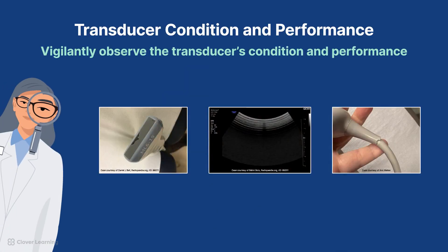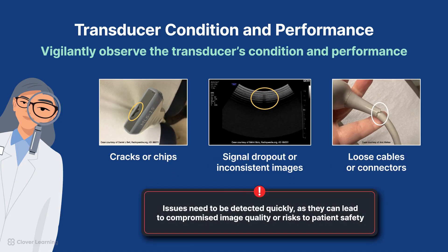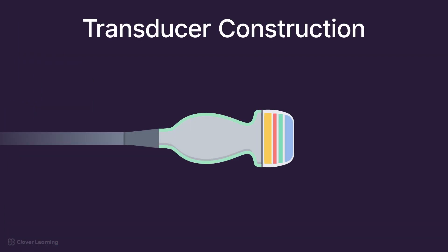Along with cleaning and storage, you should also be vigilant in observing the condition of the transducer and its performance. Cracks or chips in the protective housing, signal dropout or inconsistent images, and loose cables or connectors need to be detected quickly, as they can lead to compromised image quality or, worse, risks to patient safety.